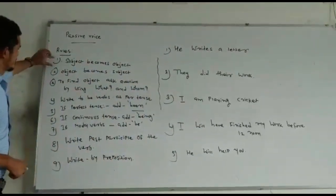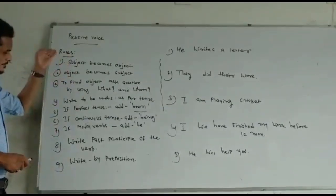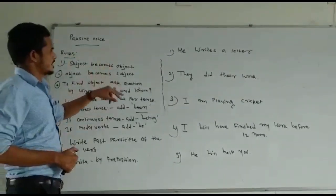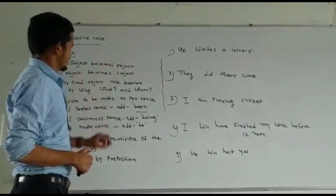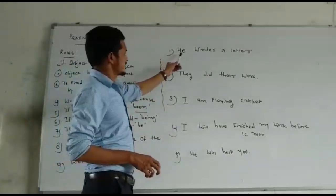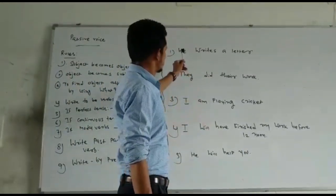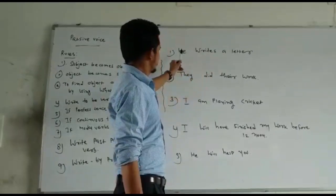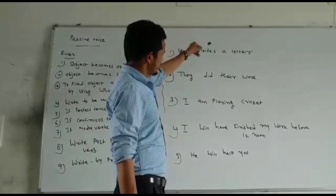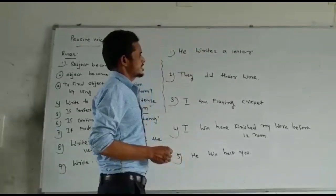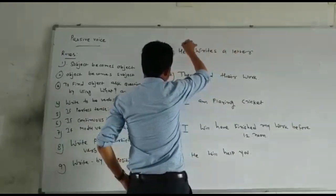First rule: subject becomes object. Because in passive voice, we have to write the sentence which starts with the object. So when a sentence like 'He writes a letter' comes — this is related to active voice — this sentence starts with the subject. But when we change this sentence into passive voice, subject becomes object and object becomes subject.